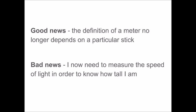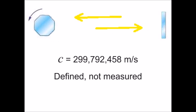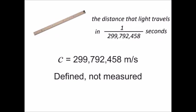The bad news is that you now need to measure the speed of light in order to know how tall you are, which sounds strange — but we can measure the speed of light. One method is using a rotating mirror where light beams bounce back and forth a very far distance between a fixed mirror and a rotating mirror. The speed of light was found to be 299,792,458 meters per second. But that was not the measured speed of light — that was defined in the mid-20th century as the speed of light. How can you do that?